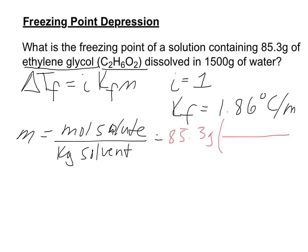And the molar mass of C2H6O2 ethylene glycol is 62.08 grams per one mole. Grams cancel.